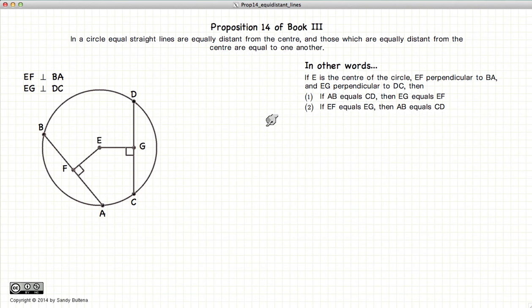Now before I state what the proposition is, I would like to let you know what one of the definitions are, which is that the distance of the line DC from the center E is defined by the length of the line drawn from E that intersects with this line and is also perpendicular to it. So the distance from the center is defined by the line EG, and the distance that BA is from the center is defined by the line EF.